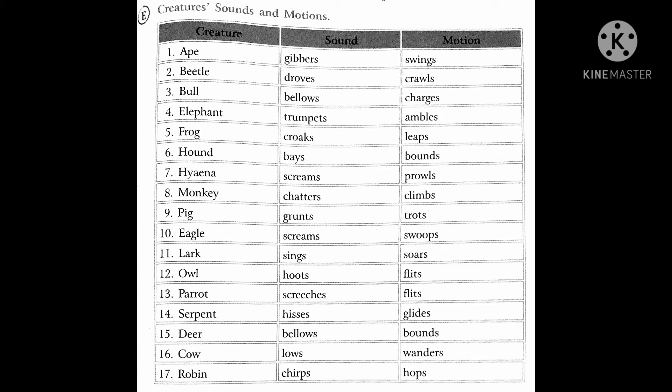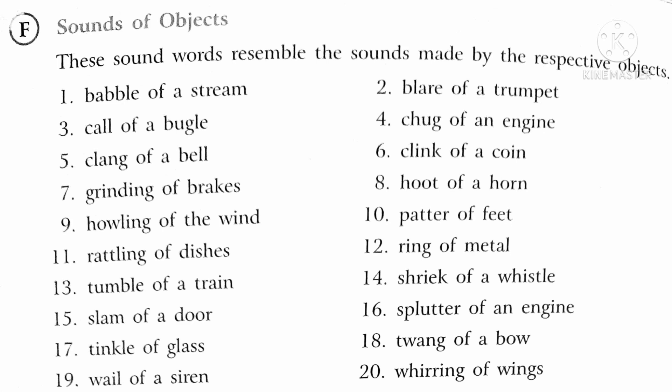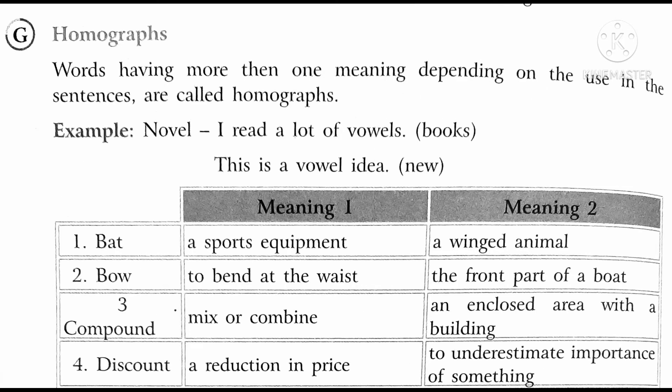Now the next one is creatures sounds and motions. In this, the creatures, animals, or birds' sounds and motions are mentioned — like an ape's sound is gibber and its motion is swings. Likewise all creatures' sounds and motions have been mentioned. The next one is sounds of objects — these words resemble the sounds made by the respective objects. Like, the babble of a stream — so the sound of a stream is babble. Likewise all sounds have been given.